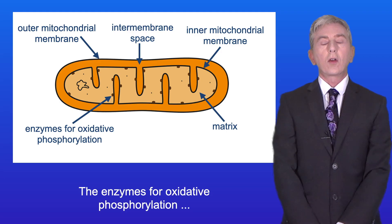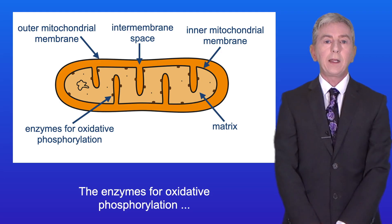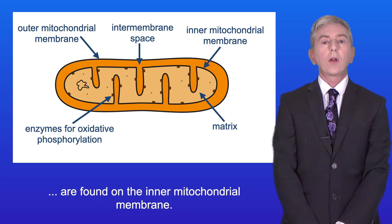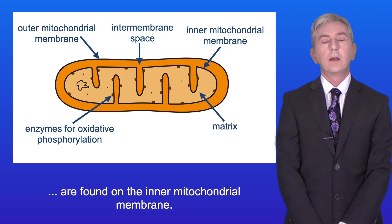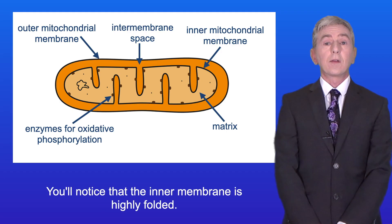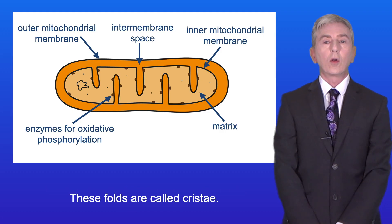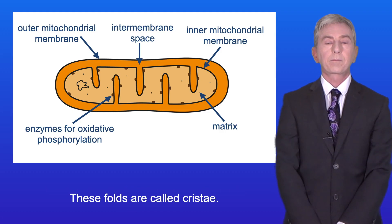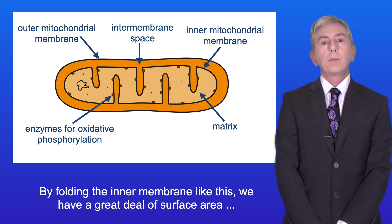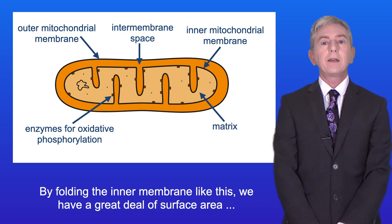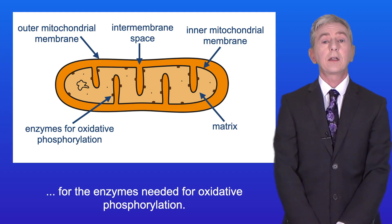The enzymes for oxidative phosphorylation are found on the inner mitochondrial membrane, and you'll notice that the inner membrane is highly folded. These folds are called cristae. By folding the inner membrane like this we have a great deal of surface area for the enzymes needed for oxidative phosphorylation.